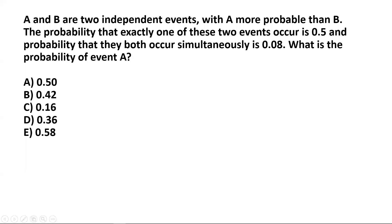A and B are two independent events with A more probable than B. The probability that exactly one of these two events occurs is 0.5, and the probability that they both occur simultaneously is 0.08. What is the probability of event A?